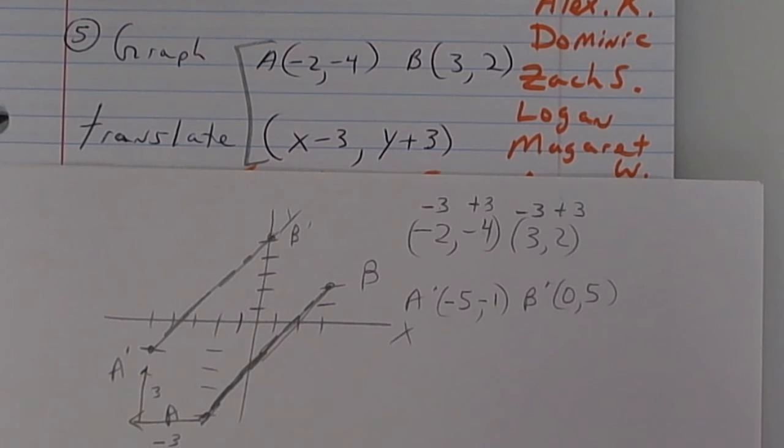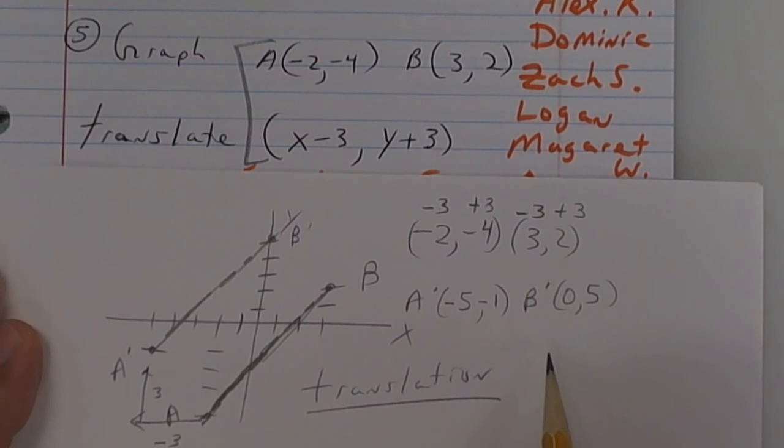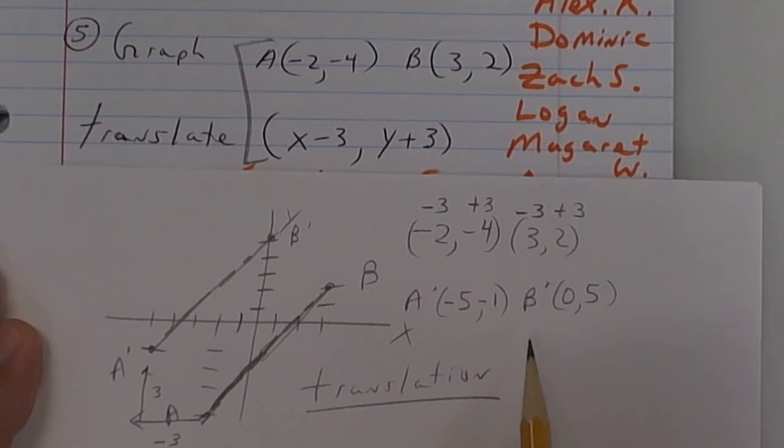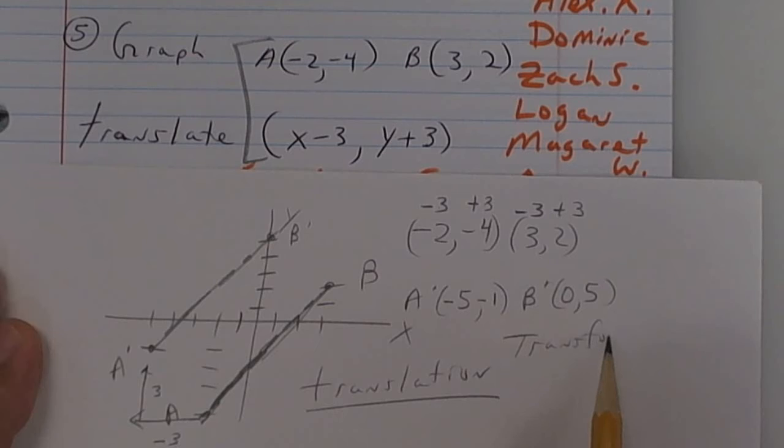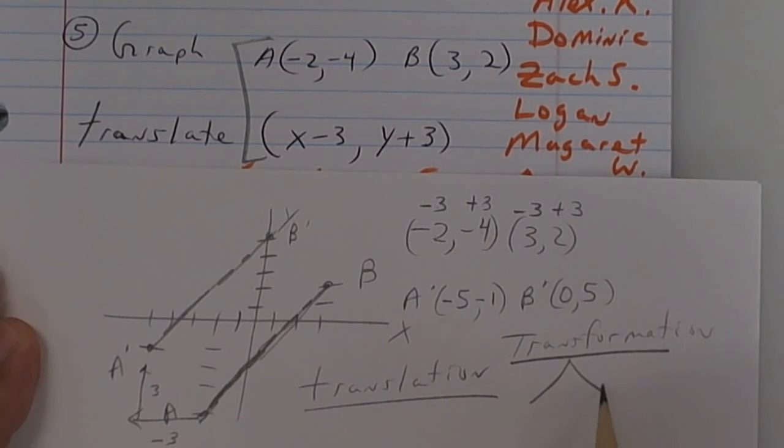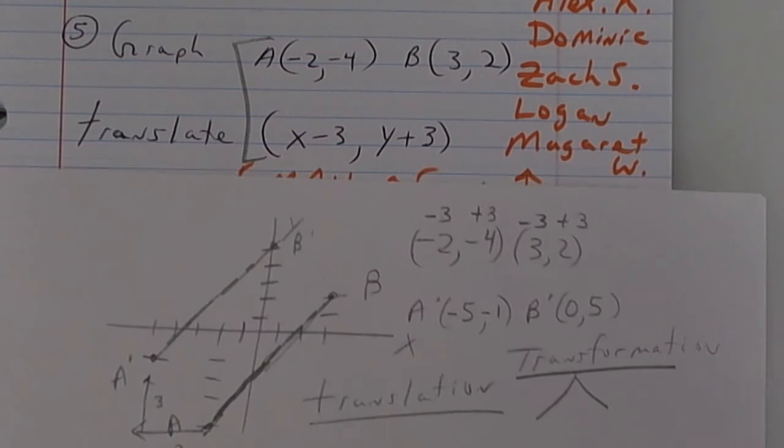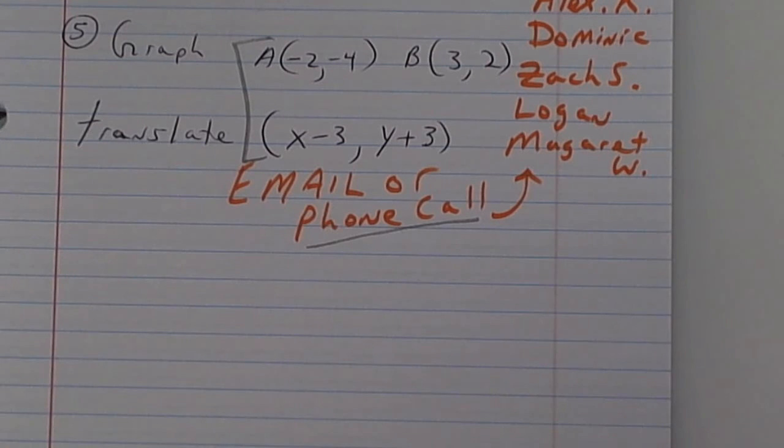Does anybody know what that's called when you slide an image? Translation. So you might want to write that down. Translation. And translation is a form of transformation. Transformation is like the big name and everything is under that, like if you rotate something, if you slide something, if you flip something. Flipping is called reflection. Put away your bell work. Here's how we're going to handle it today.